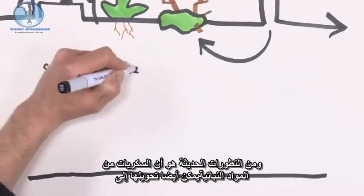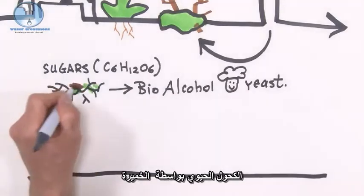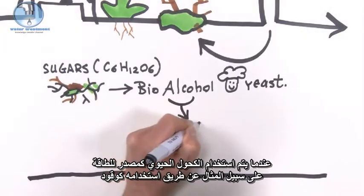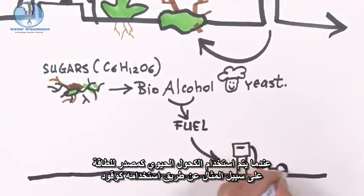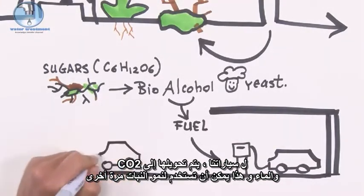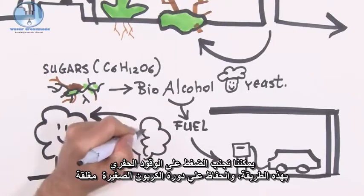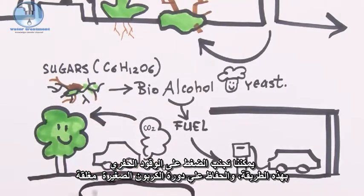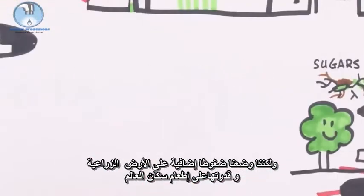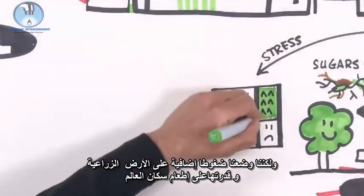A recent development is that the sugars of plant material can also be converted into bio-alcohols by baker's yeast. When the bio-alcohols are used as an energy source, for example as fuels for our cars, it is converted into CO2 and water, which can be used for plant growth again. We can avoid the stress on fossil fuels in this way and keep the small carbon cycle closed, but we put additional stress on agricultural ground and the ability to feed the world population.